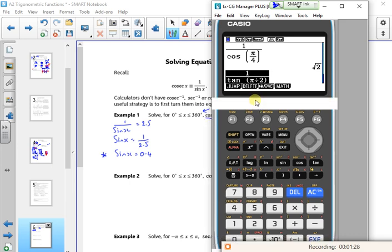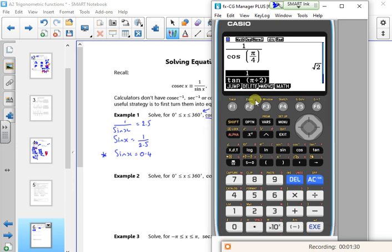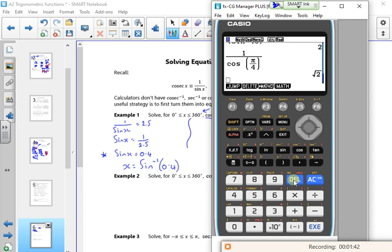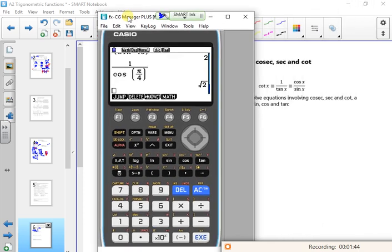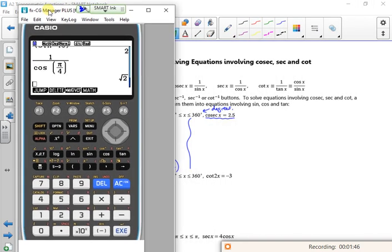So I want the principal value which is the inverse sine of 0.4. So shift sine 0.4. So that gives me an x value of 23.6 degrees.